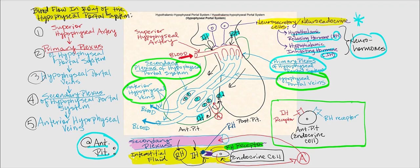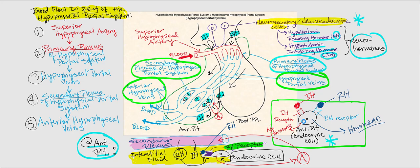The releasing hormone binds to its receptor on the endocrine cell, causing it to secrete a hormone — these regulatory hormones control the secretions of these endocrine cells. But what if IH binds to its receptor on the endocrine cell? The effect is the opposite: no hormone is secreted. Why? Because IH is an inhibiting hormone.